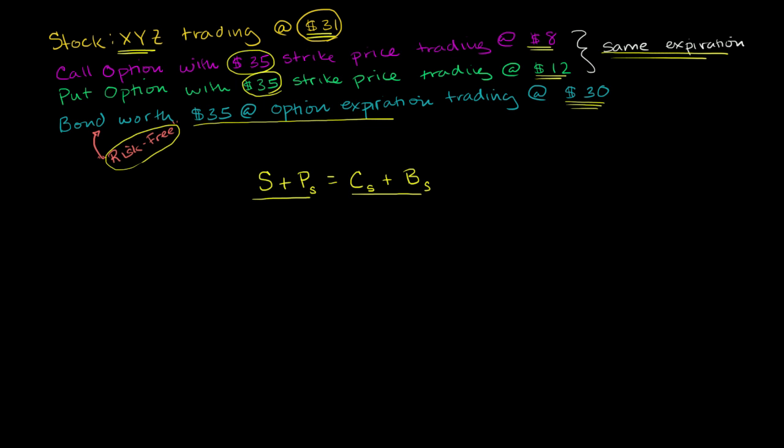The stock is trading at $31. The put option is trading at $12. So on the left-hand side, if you had to buy it right now, it's trading at $43.